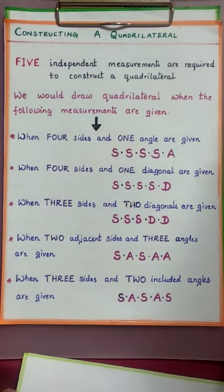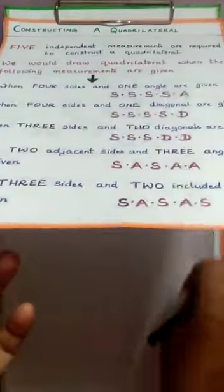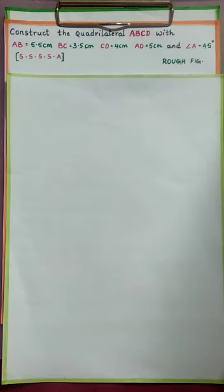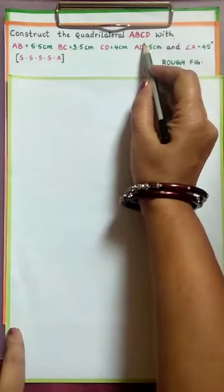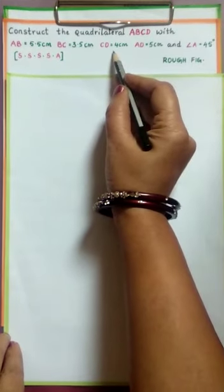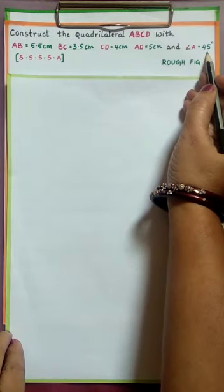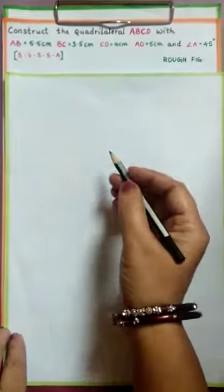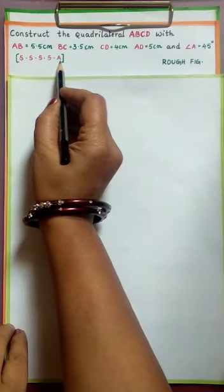Now let us learn each case with examples. See the first construction: construct the quadrilateral ABCD with AB = 5.5 cm, BC = 3.5 cm, CD = 4 cm, AD = 5 cm, and angle A = 45 degrees. Here, with these measurements — 4 sides and 1 angle given — let us see how a quadrilateral can be constructed.